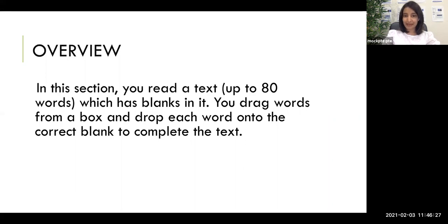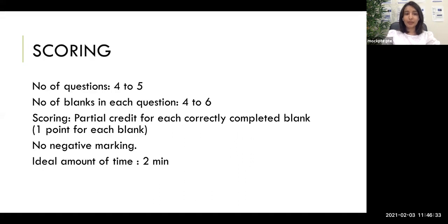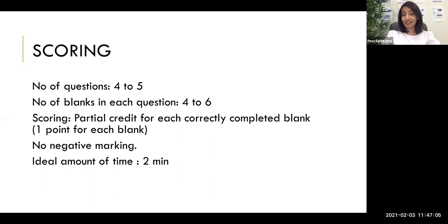In this section you read a text of up to 80 words which has blanks in it. You drag words from a box and drop each word onto the correct blank to complete the text. You will get four to five questions with around four to six blanks in each paragraph. The scoring is partial credit — you get one point for each correctly completed blank. There is no negative marking, so a wrong answer gives you zero, not minus one. Spend around two minutes per paragraph.